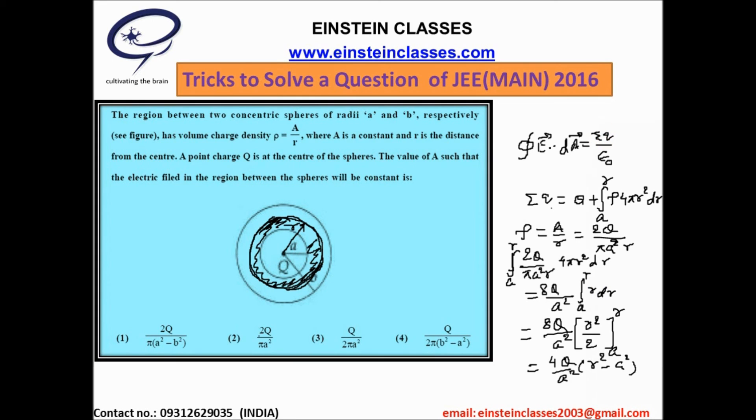the right hand side. And after that we can get the value of E dot dA. The left hand side of the Gauss theorem will become E into 4 pi r square. This will be equal to r square, this will be equal to